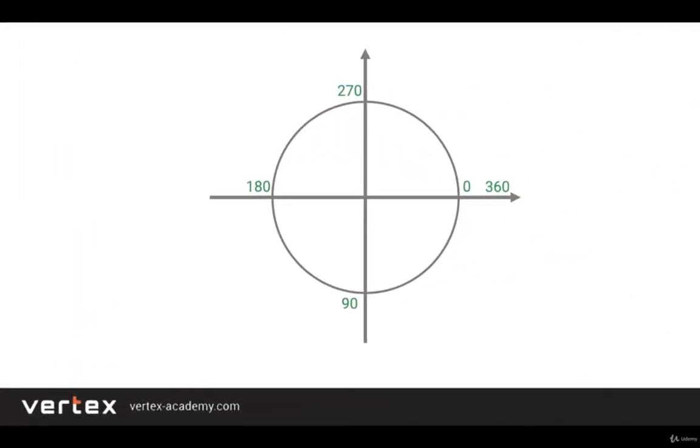Every circle has 360 degrees. So on the right side we have 0 degrees. Then if we move clockwise we have 90 degrees, then 180 degrees, after that 270 degrees and finally 360 degrees. So at the same point we have 0 and 360 degrees.